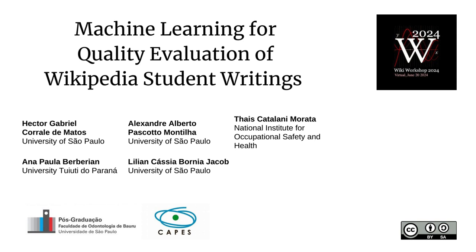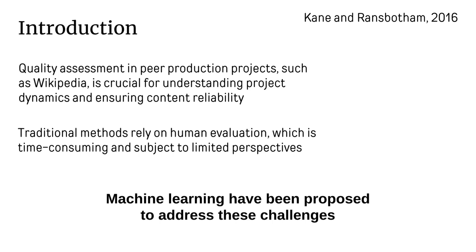Welcome to our session at the Recruit Shop titled Machine Learning for Quality Evaluation of Wikipedia Student Writings. This research studies the application of machine learning algorithms to assess the quality of articles edited by students on Wikipedia. As an introduction, quality assessment is crucial in peer-production projects such as Wikipedia. Traditional human evaluation methods face several challenges, including scalability issues and subjectivity.